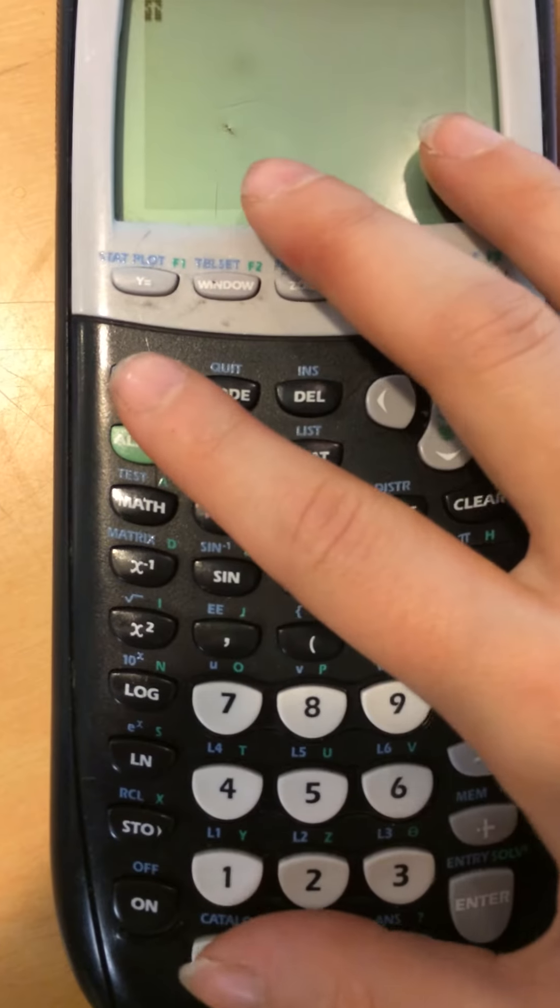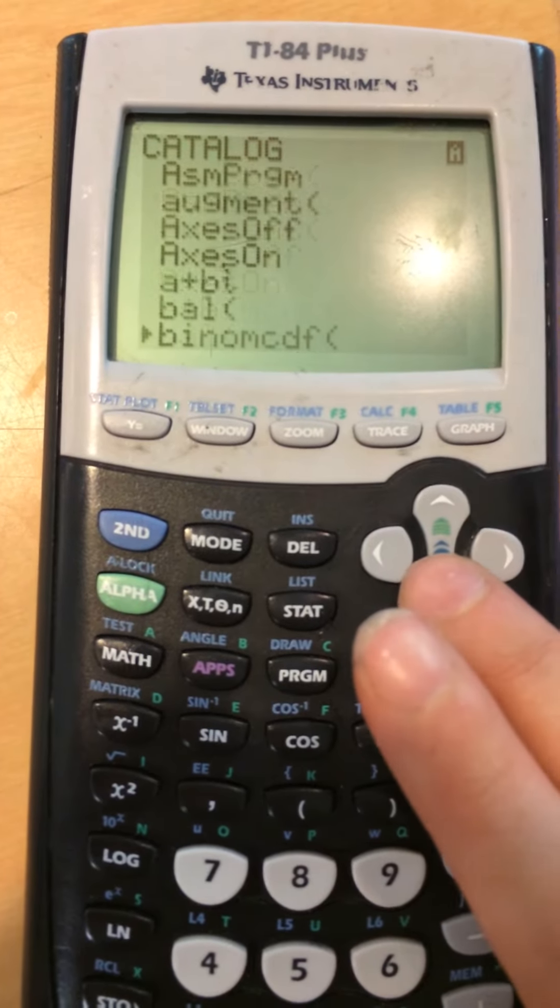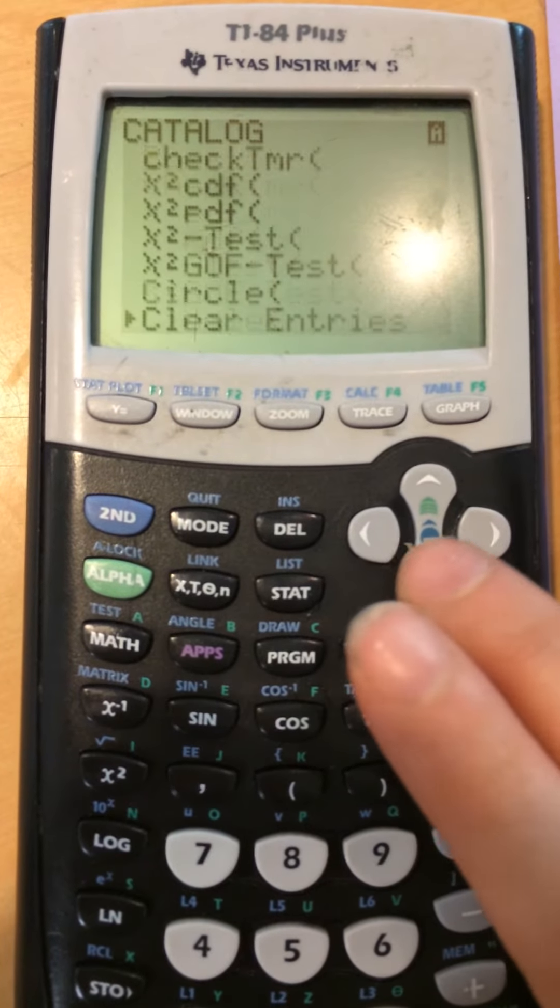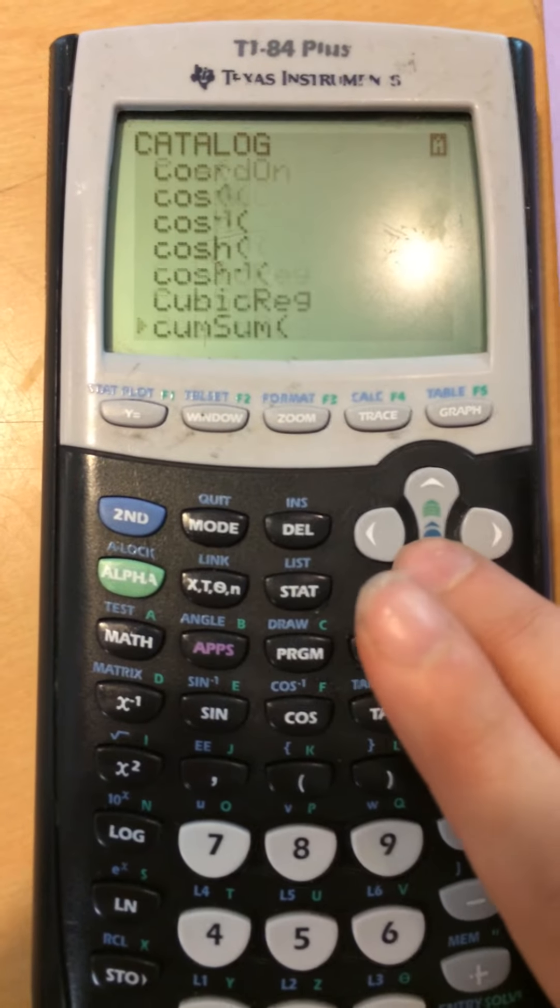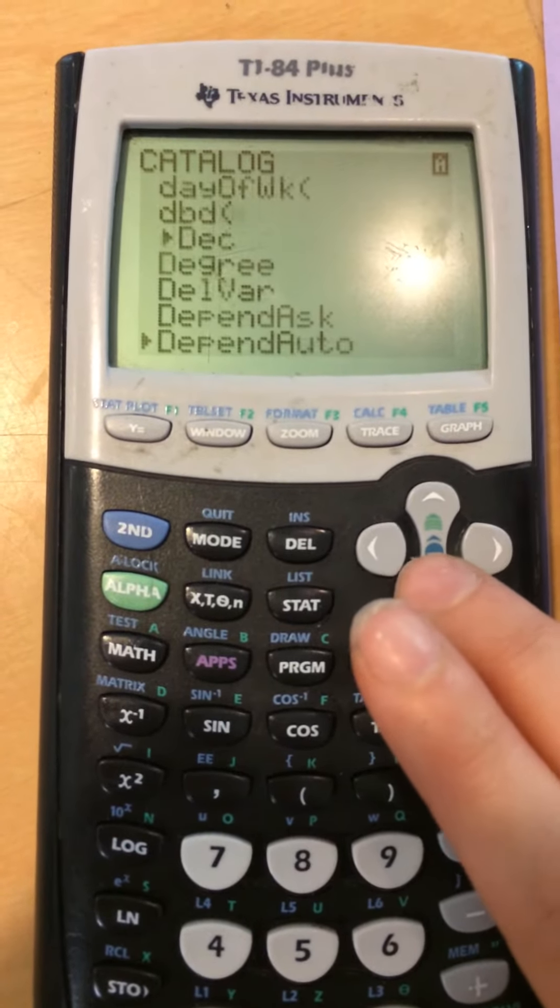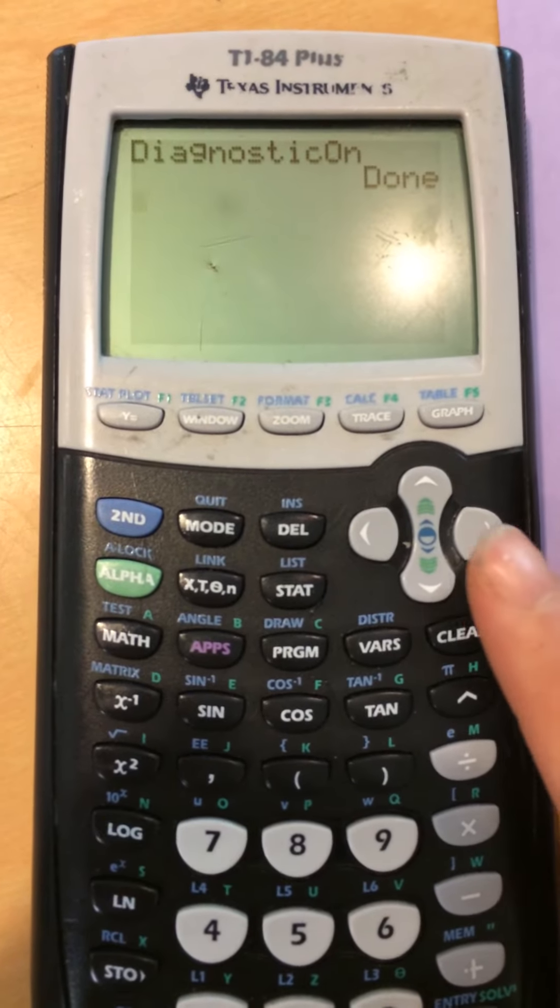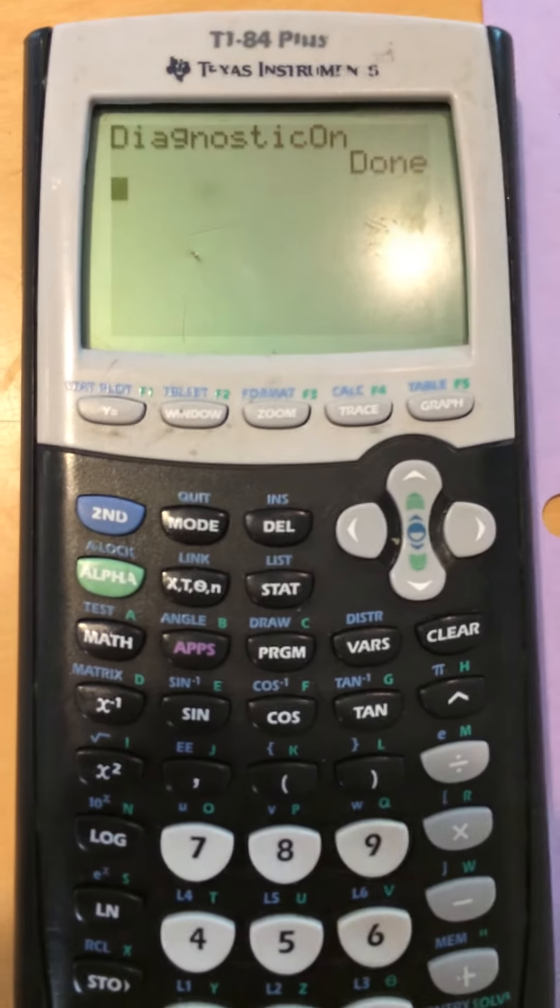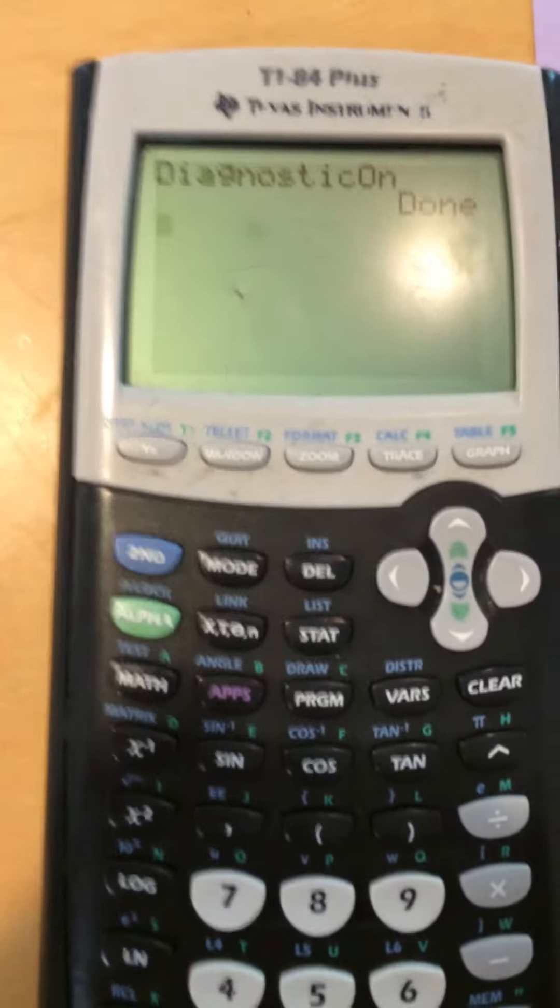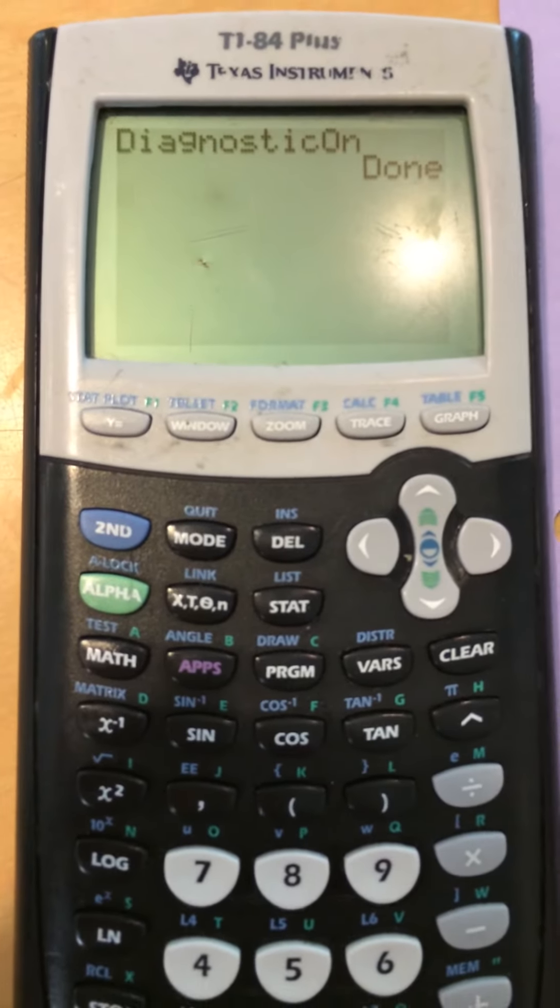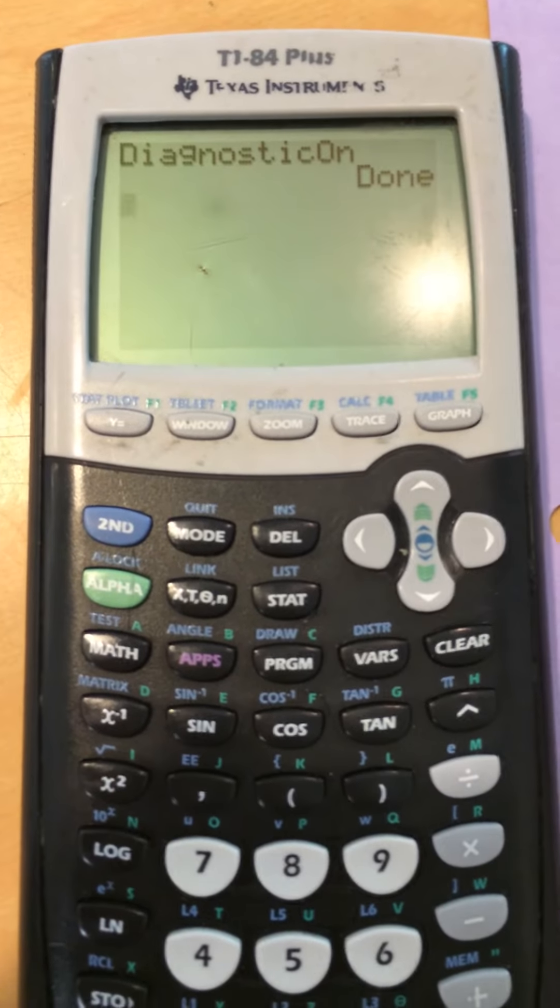So if you do second catalog, go down to diagnostic. You want it on, then press enter. All that does is it will show you the correlation coefficient if you do a regression. Otherwise it wouldn't. You still would be able to do all this, but you wouldn't really be able to analyze how good of a correlation it is because it wouldn't show you the R or the R squared.